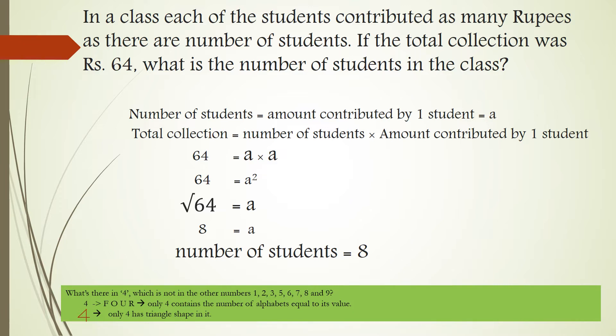Coming to the aptitude question: the amount contributed by each student and the number of students are the same. This means if you multiply two same numbers, a and a, you get 64. So a² = 64, which means a = 8. The answer is 8 students in the class.